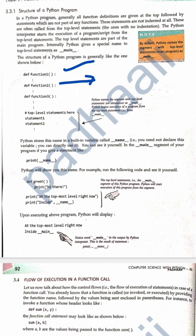In a Python program, generally all function definitions are given at the top, followed by statements which are not a part of any function. These statements are not indented at all — they are often called top-level statements. The Python interpreter starts execution of a program from the top-level statement. The top-level statements are a part of the main program.